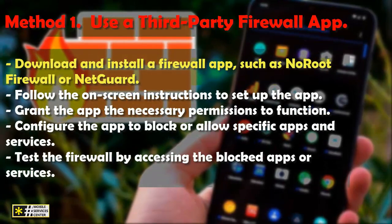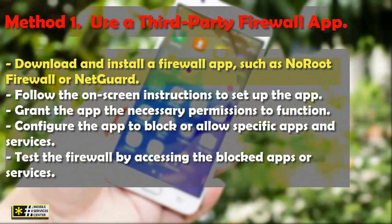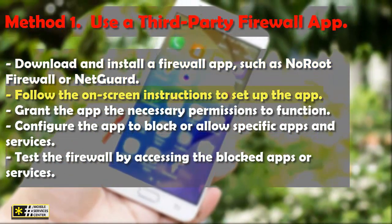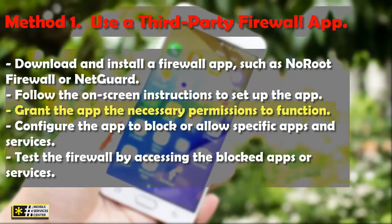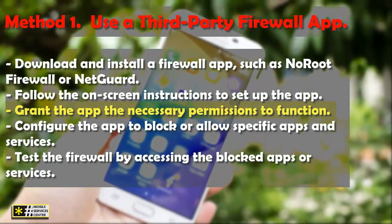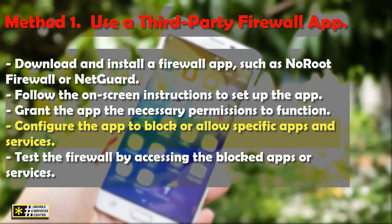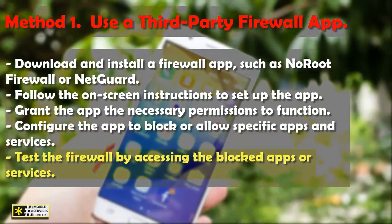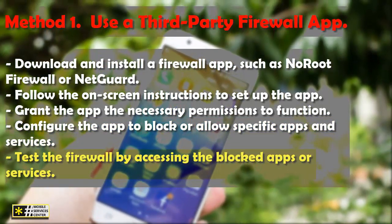Here's how to add a firewall to your Android device using a third-party firewall app. Download and install a firewall app, such as NoRootFirewall or NetGuard. Follow the on-screen instructions to set up the app. Grant the app the necessary permissions to function. Configure the app to block or allow specific apps and services. Test the firewall by accessing the blocked apps or services.